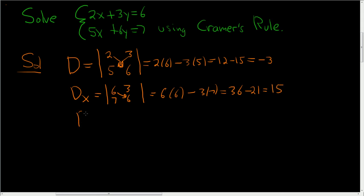Then you compute big D sub y. To compute big D sub y, you just block out the y's and replace it with the 6 and the 7. So 6, 7, and you keep the x's. 2 times 7, 14 minus 6 times 5 is 30. So you get negative 16.